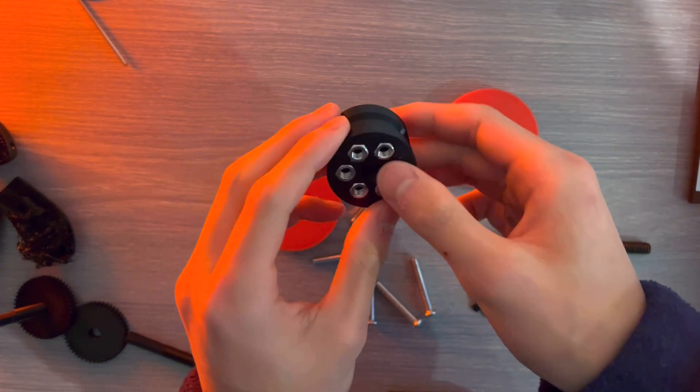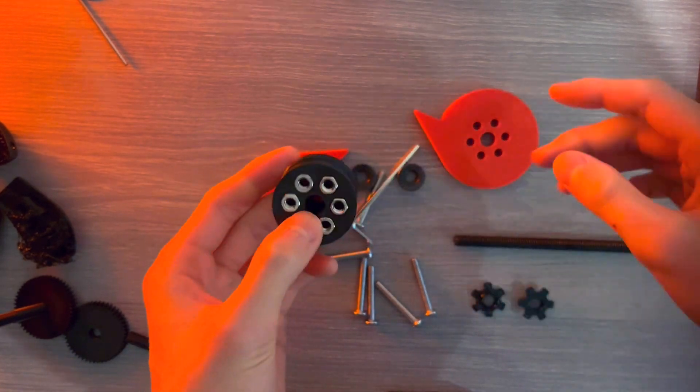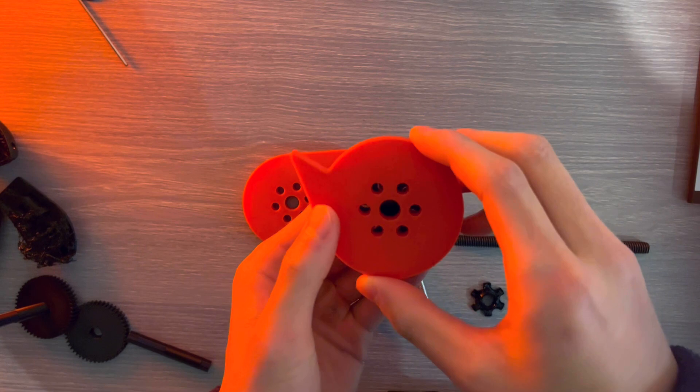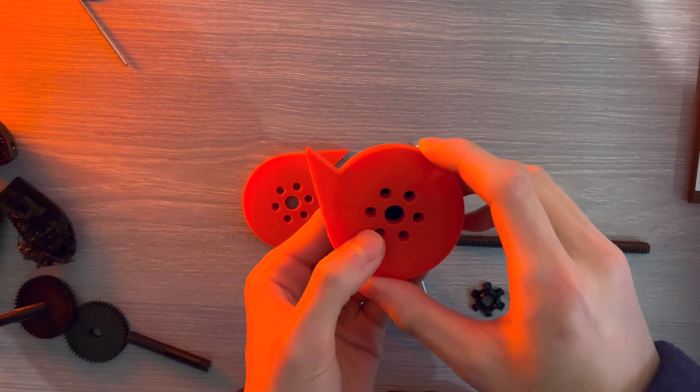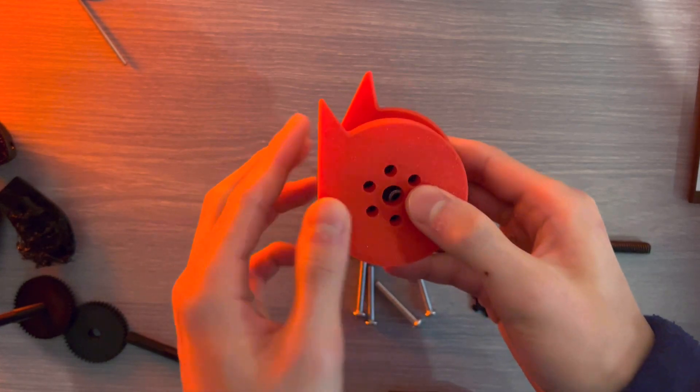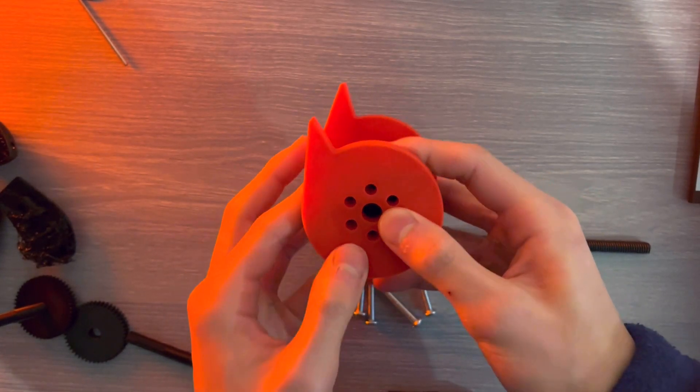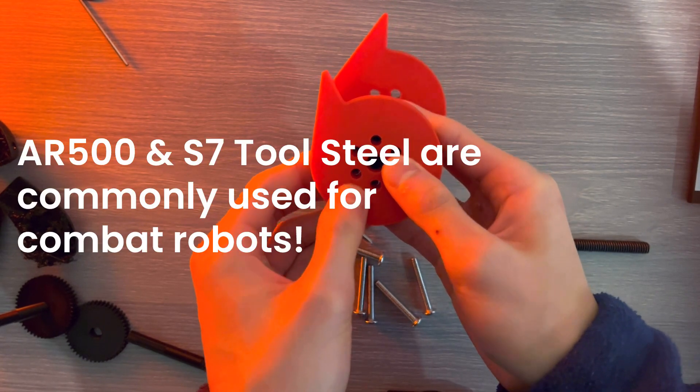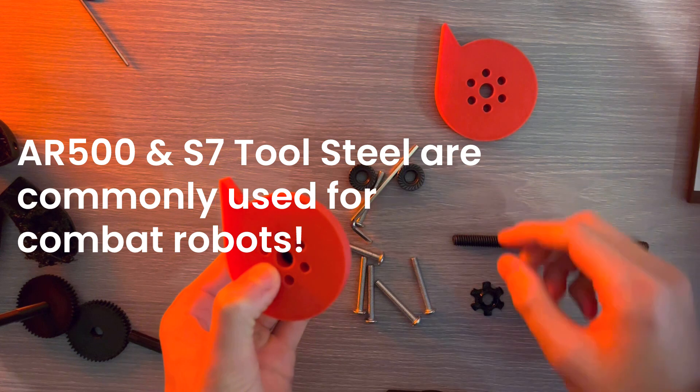So, the weapon hub. I placed these M5 nuts in here already. This is PLA+, but I'll definitely switch it out for a stronger material, maybe AR-500 or S7 tool steel. I'll figure that out later.